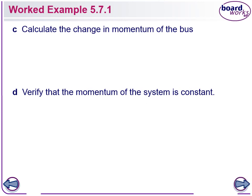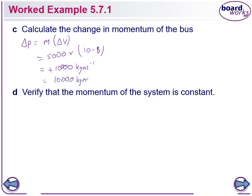Calculate the change in momentum of the bus. Change in momentum equals m·ΔV, because the mass of the bus doesn't change. The mass of the bus is 5,000, multiplied by (final 10 minus initial 8), which gives positive 10,000 kilogram meters per second east.